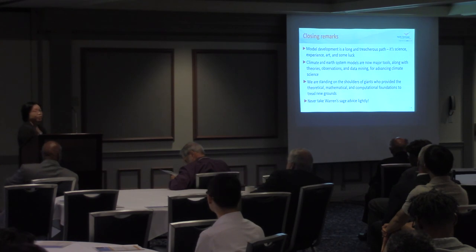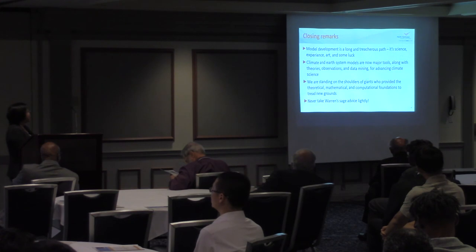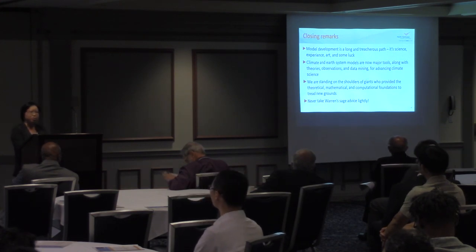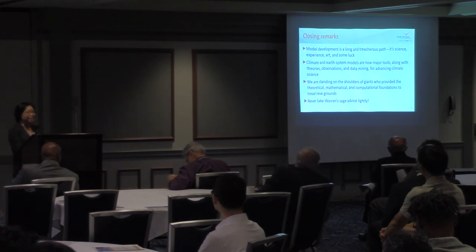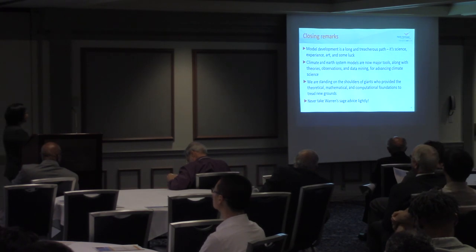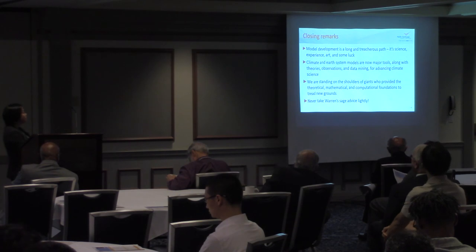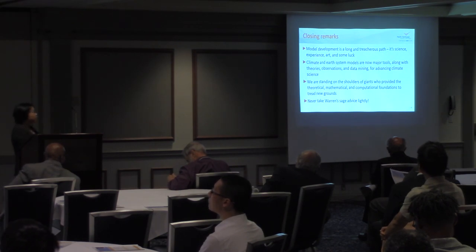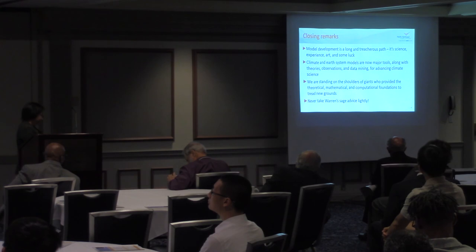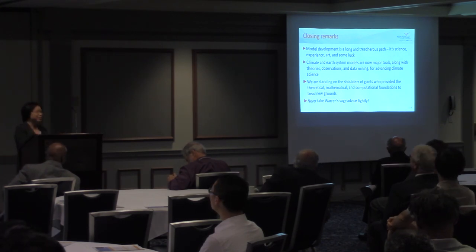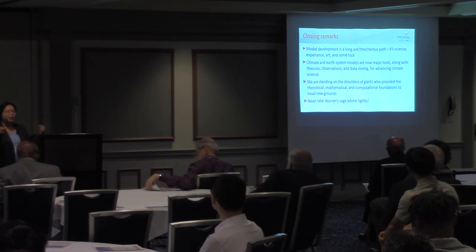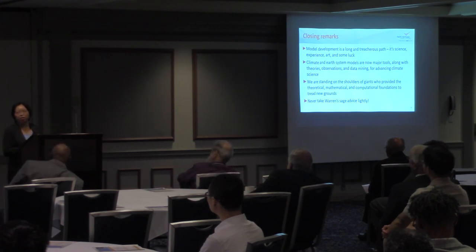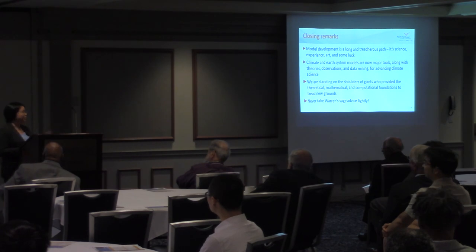In closing, model development is a very long and treacherous path. It's definitely science, it needs a lot of experience, and in some ways it's also an art — and we also need some luck. Climate and Earth system modeling are now major tools, along with theories, observations, and data mining, to help us advance climate science. Very importantly, we are standing on the shoulders of giants who provided the theoretical, mathematical, and computational foundations to break new ground. Warren is one of those giants. And my last remark: never take Warren's sage advice very lightly. He told us to be careful about conservation, and we have been dealing with conservation problems with water, energy, and carbon all the time. Thank you very much.